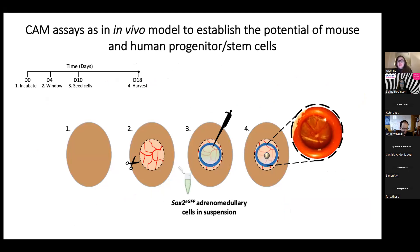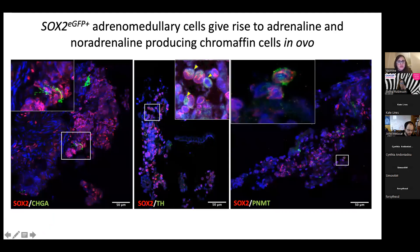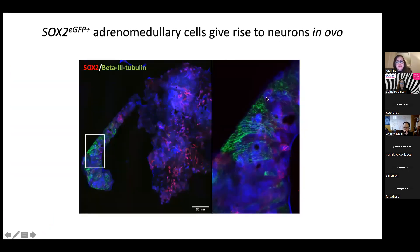We adapted this system in the lab. After exposing the CAM, we seeded SOX2-EGFP cells (SOX2 cells labeled in green) from the postnatal adrenal medulla. These cells gave rise to a vascularized tissue that maintained some endogenous EGFP, indicating maintained SOX2 expression. We also found that some cells had differentiated and started expressing markers of differentiated adrenal medulla, such as Chromogranin A, TH, and PNMT. These cells also gave rise to neurons, as seen with beta-3-tubulin staining - a further proof of stem cell potential in this living system.